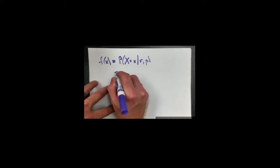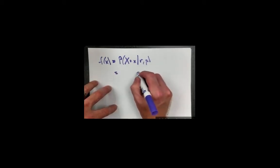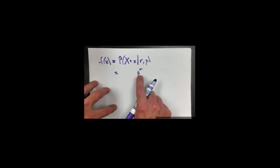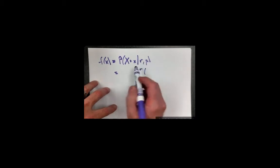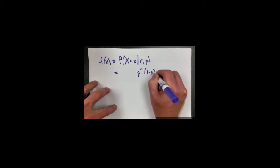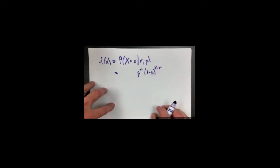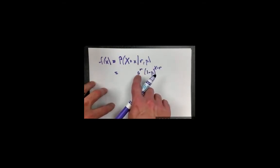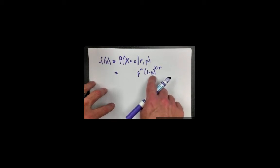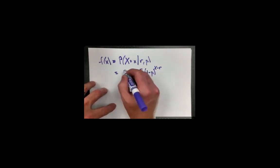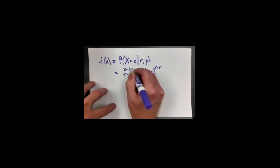We can think through the rationale of this. We know that there are a total of r successes, so that means we have r factors of p. The remaining factors of x would be x minus r — those are each essentially failures to observe the desired result. Since one of these p's has to happen last, that means we have p to the r minus 1 times (1 minus p) to the x minus r, and all the possible ways that can be rearranged would be x minus 1 choose r minus 1.